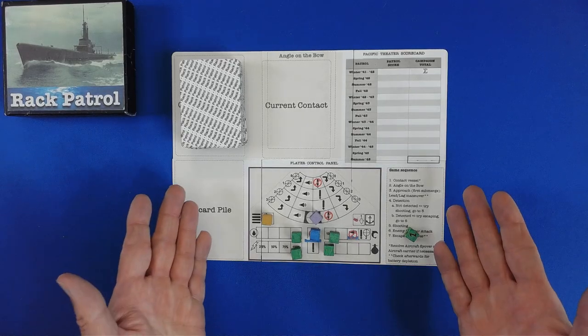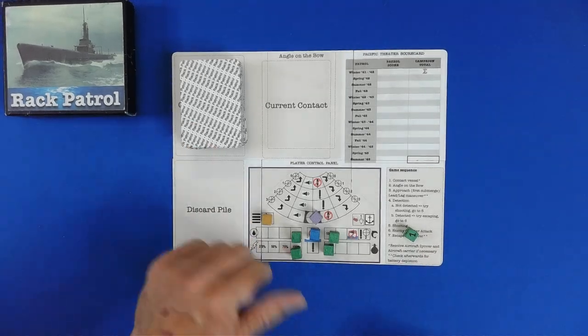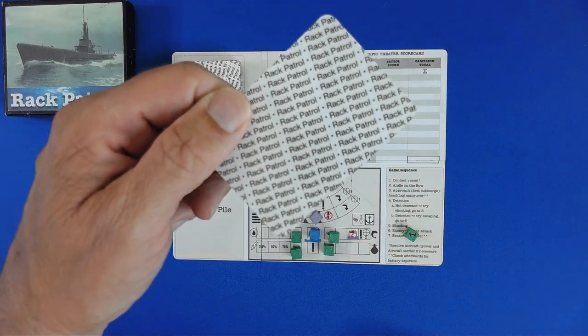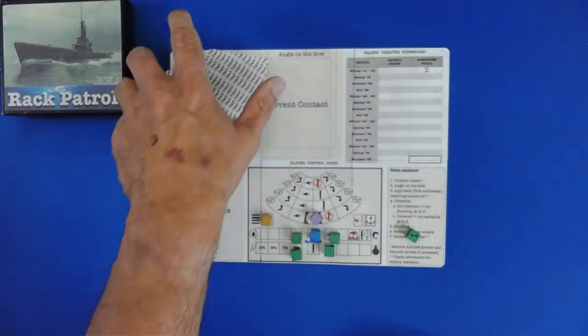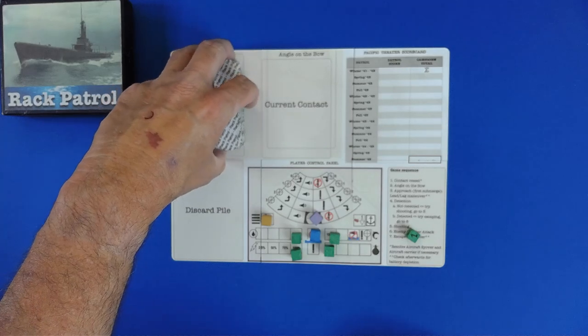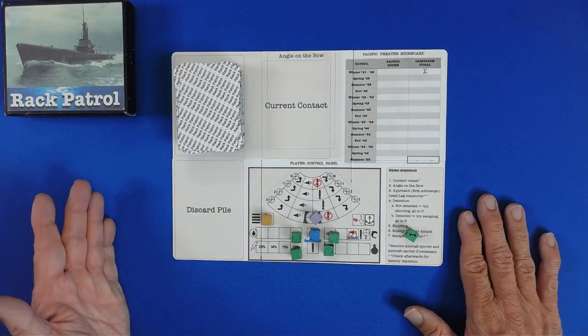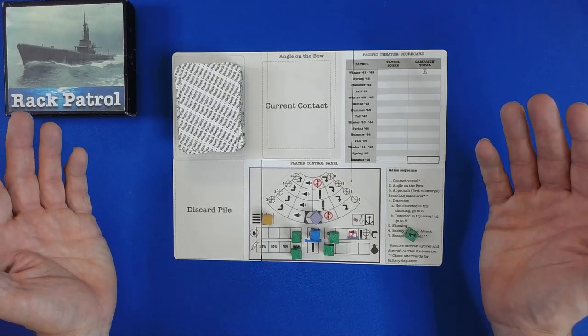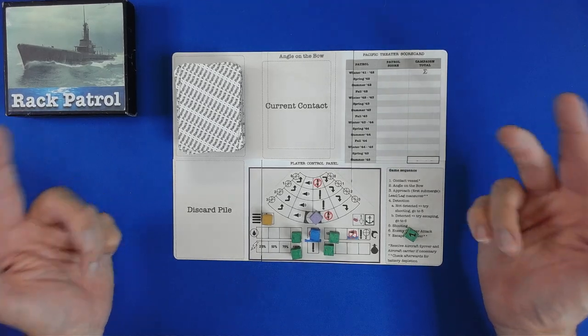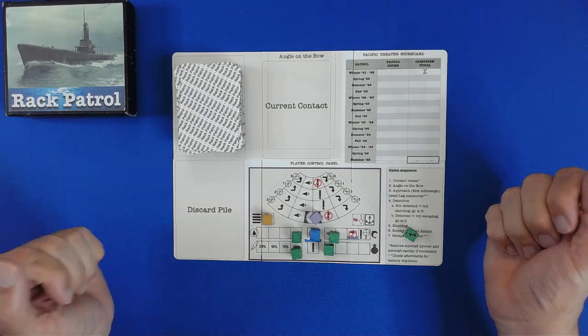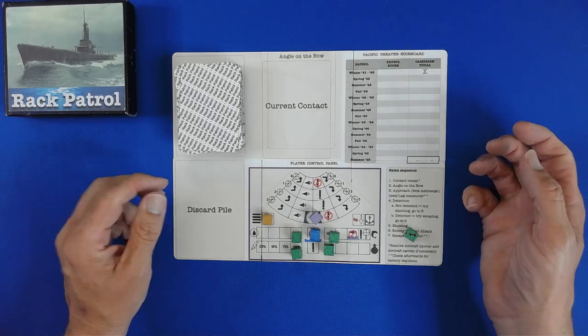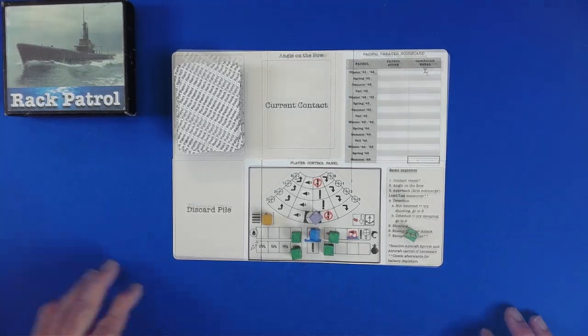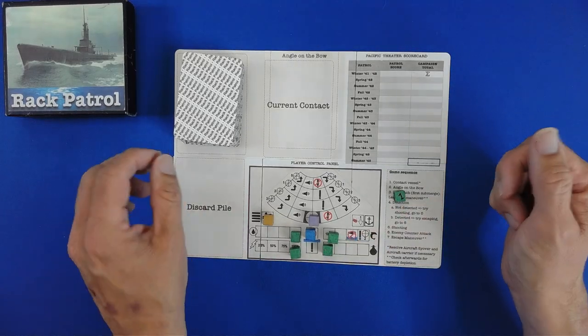Rack Patrol is currently a print and play game, which you can tell because that's my backing of my card. And they are currently in the process of having a manufactured game going to be called the USS Harder. It will be appearing on Kickstarter, or should be. As a point of reference, I have received absolutely no compensation or requests or anything. I love this game and I want to see it do well on Kickstarter. So, let's go ahead and let's get started.